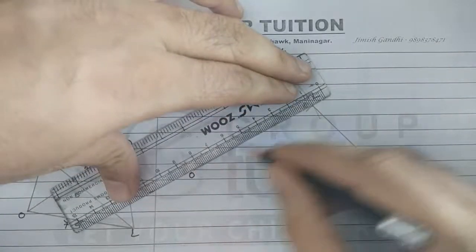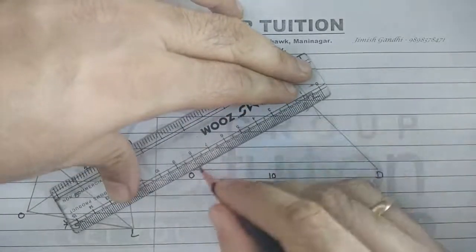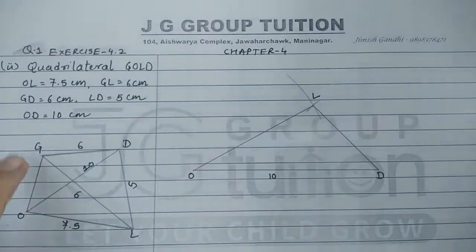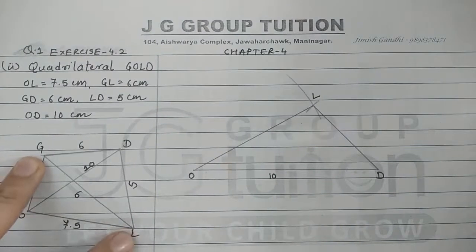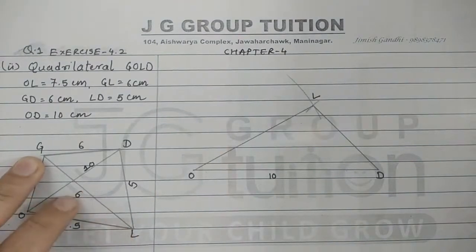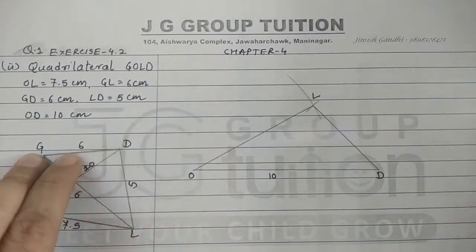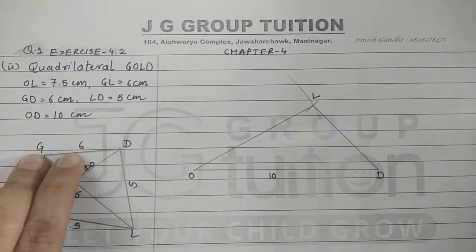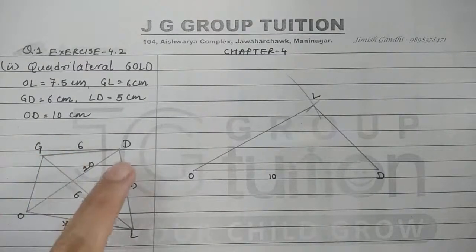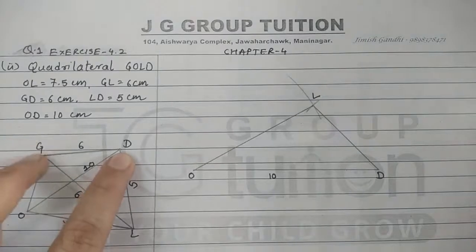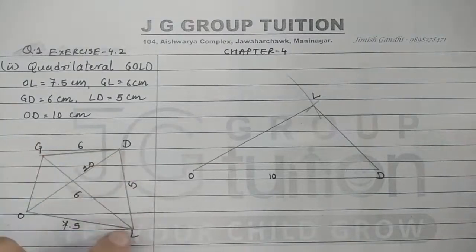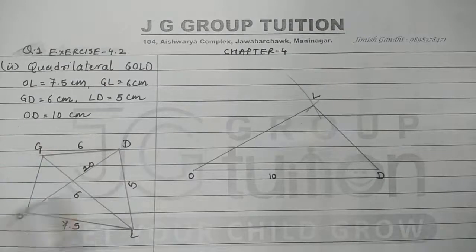Only one vertex is left now. That is G. We have the length LG of 6 and GD that is again of 6. So to obtain point G, one arc should be drawn from point D of 6 centimeters and one arc should be drawn from L of 6 centimeters. Let us take the length of radius 6 centimeters.